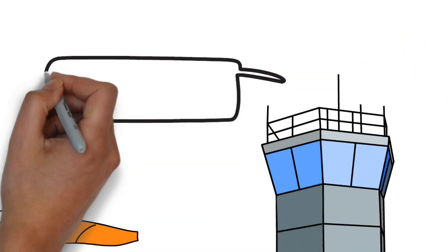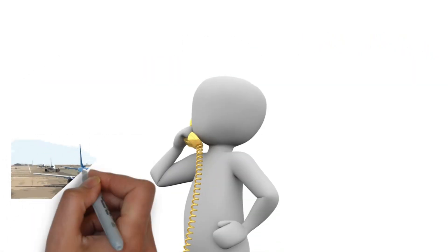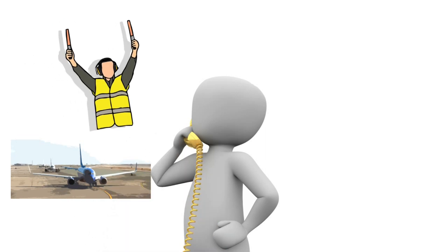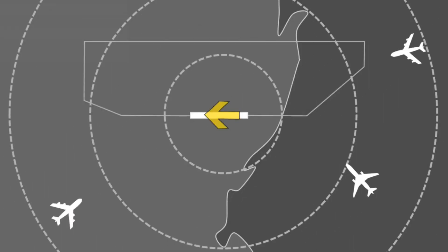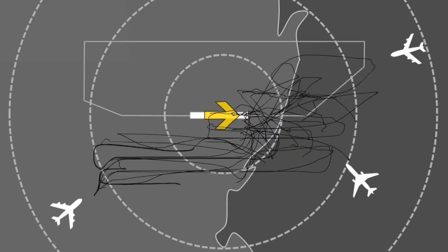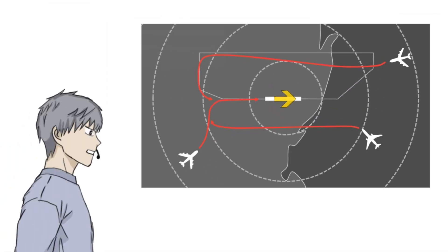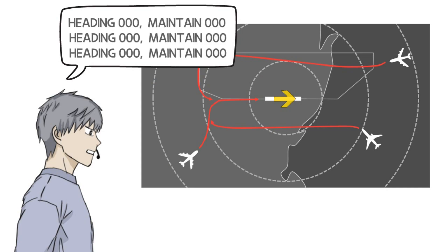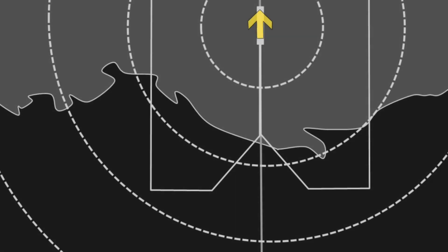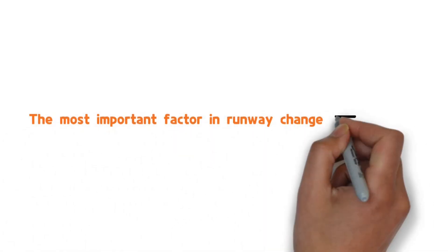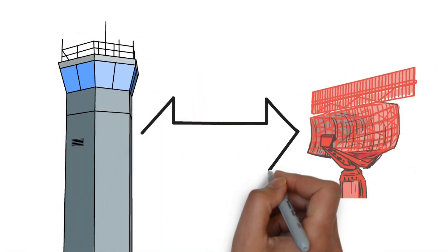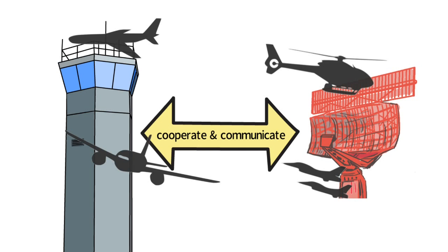Once the runway change is decided, the tower controller informs not only departing aircraft, but also the staff on the ground, weather station, and airport operations center. On the other hand, a radar controller has to set the vector of all aircraft in the opposite direction, keeping the controller busy instructing new heading and altitude to each aircraft. If the runway is changed with aircraft already lined up on the final approach route, the controller will be sufficiently flustered. Therefore, it is necessary for the tower controller to cooperate and communicate the traffic situation with the radar controller.